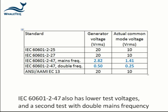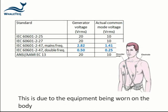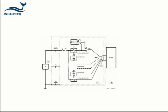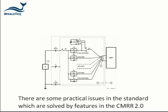In IEC 60601-2-47, the test voltage and frequency is different to other standards. This is due to the equipment being worn on the body. There are some practical issues with the setup in the standard, which are solved by some of the features in the Whaletech CMRR box.